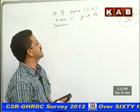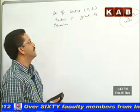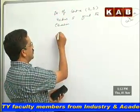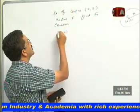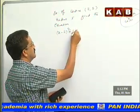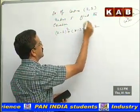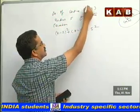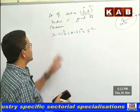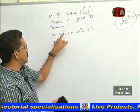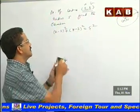If the center of the circle is (2, 3) and the radius is 5, find the equation. We know the equation of the circle is (x − 2)² + (y − 3)² = 5², because the center is (2, 3). The general form is (x − a)² + (y − b)² = r².